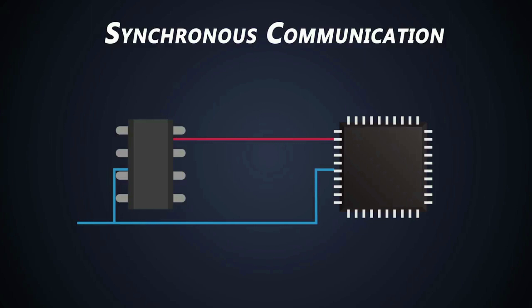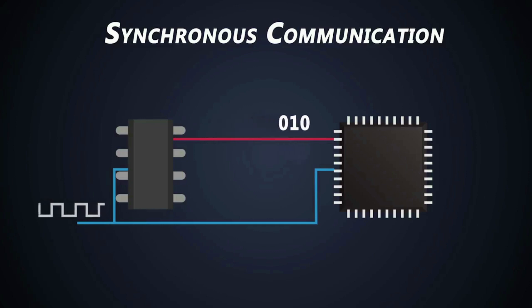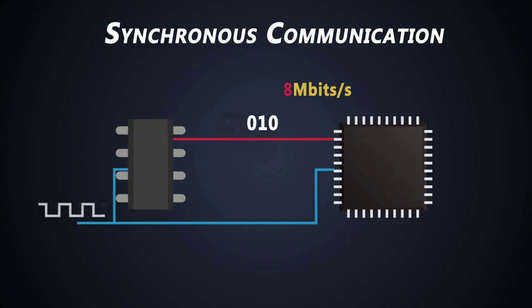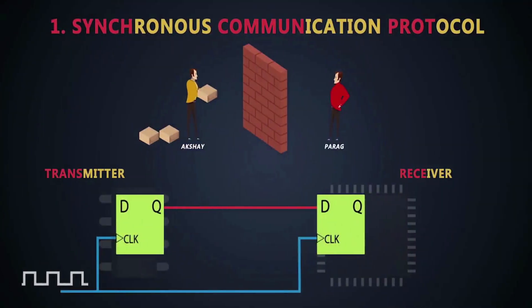In a synchronous communications protocol, all devices communicating with each other share the same clock signal. The reason why we use SPI communications is because it is very fast, working at high speeds up to 8 megabits per second or even more, and supports higher clock frequencies. If you don't know what synchronous and asynchronous communications protocols are, you can watch a video where I have explained both in a very interesting way.